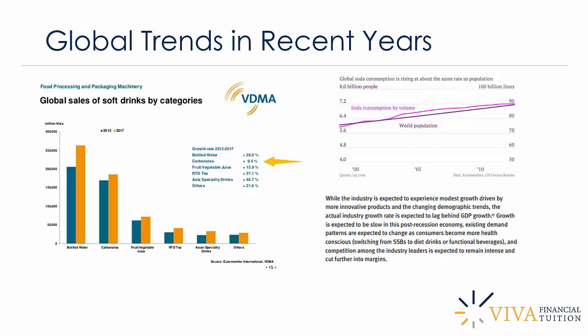A qualitative analysis states: while the industry is expected to experience modest growth driven by more innovative products and changing demographic trends, the actual industry growth rate is expected to lag behind GDP growth. Growth is expected to be slow in the post-recession economy. Existing demand patterns are expected to change as consumers become more health conscious — and we'll be coming back to this health consciousness issue as it is absolutely crucial in this industry.